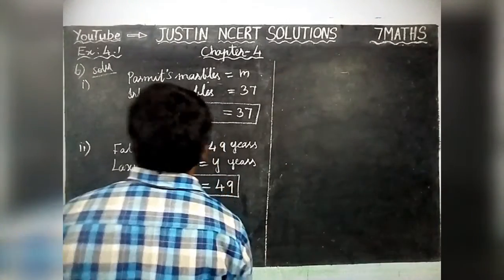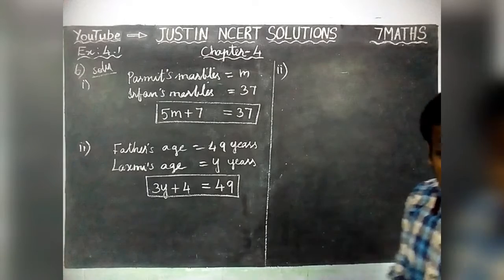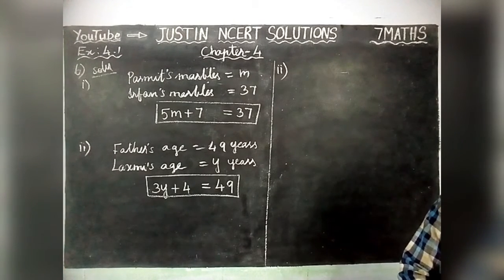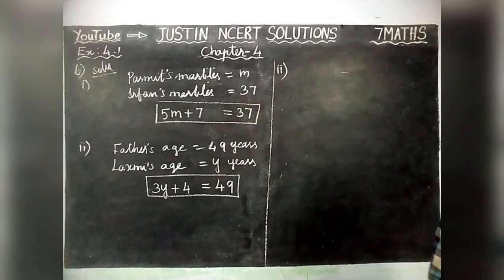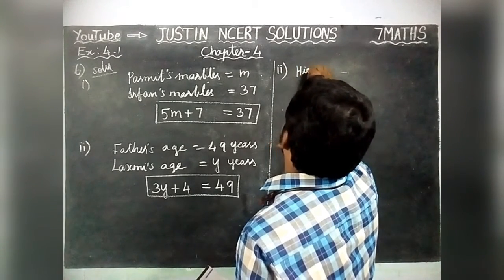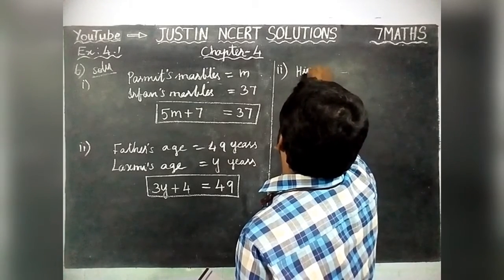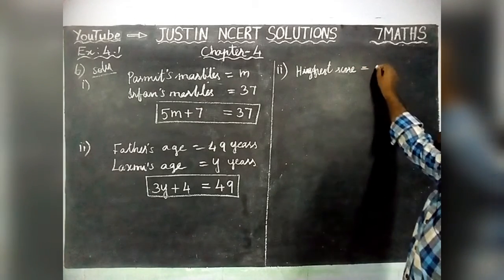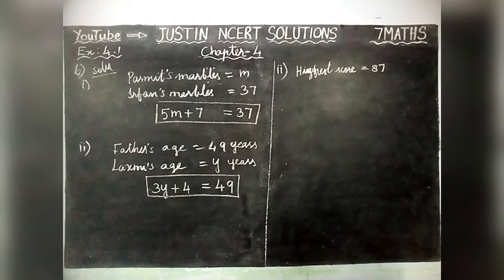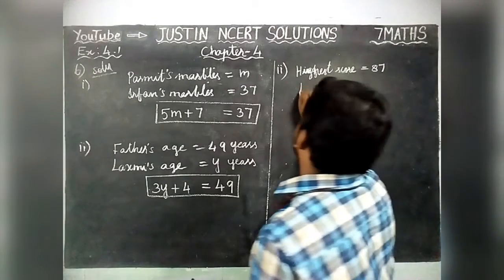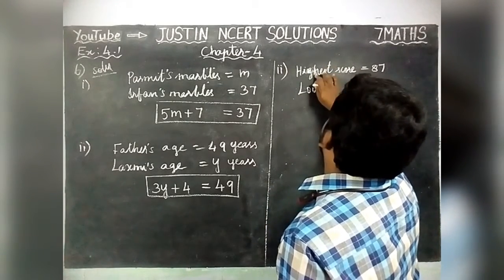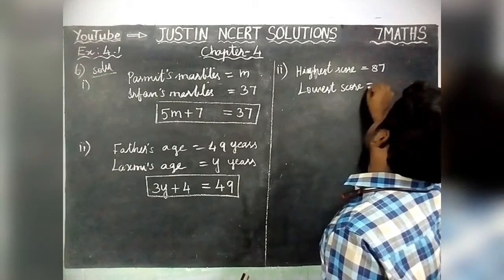We are going to solve the 3rd question. The teacher tells the class that the highest mark obtained by a student in her class is twice the lowest mark plus 7. The highest score is 87. Highest score is equal to 87. Lowest score is equal to L.